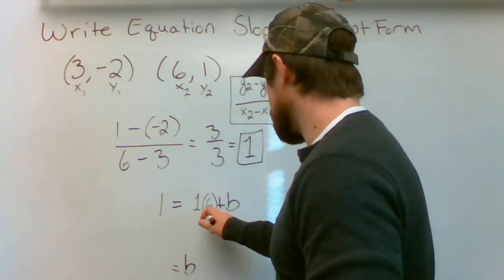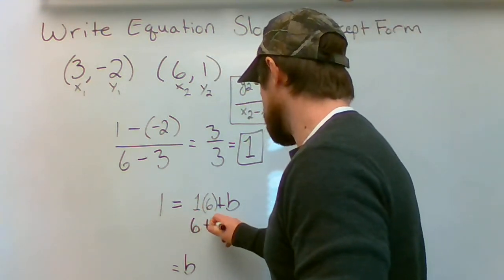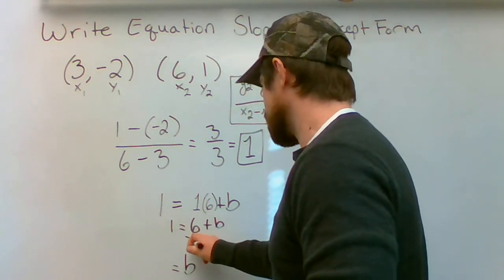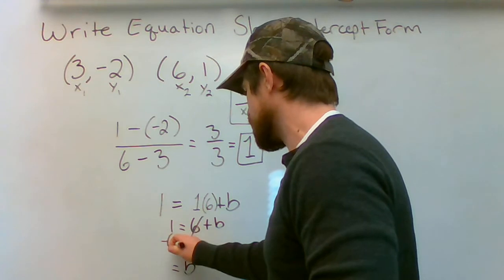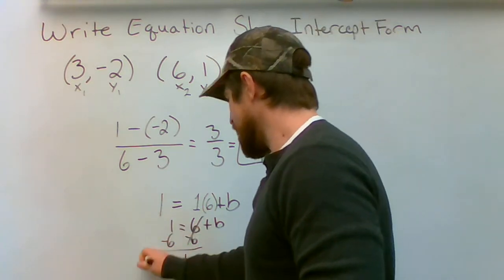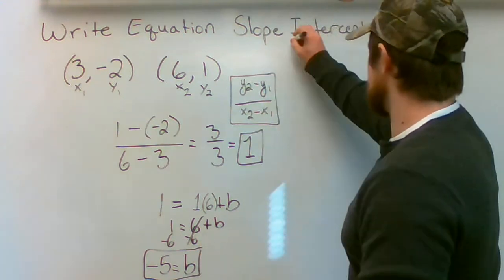Alright, so I'm going to say 1 times 6 which is 6 plus b equals 1. Subtract 6. Cancels. Subtract 6. 1 minus 6 is negative 5. So now I have the b or in other words the intercept.